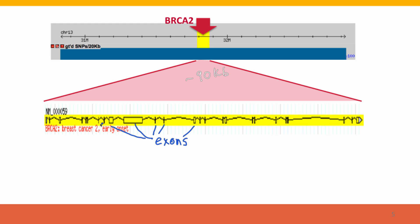Counting through, there are about 25 exons in this gene. But most of the gene isn't exons at all. Most of the gene — like this segment here — is introns.